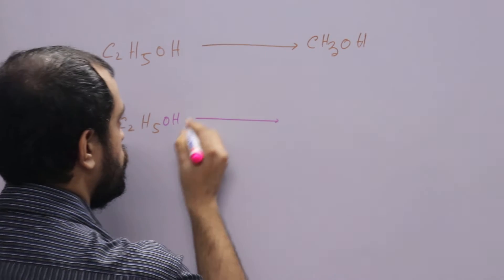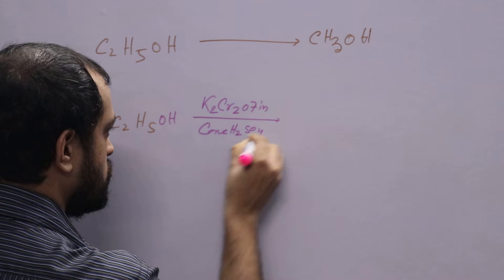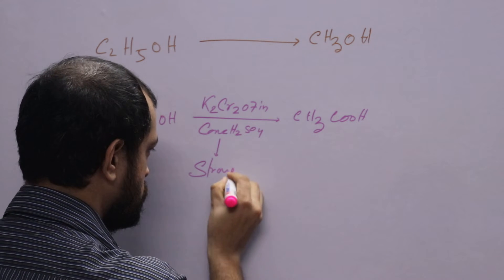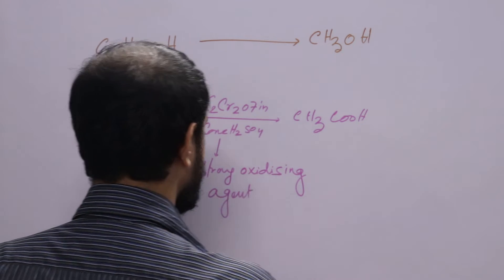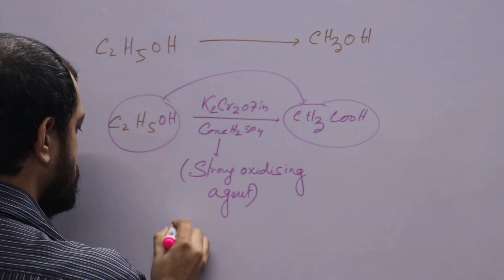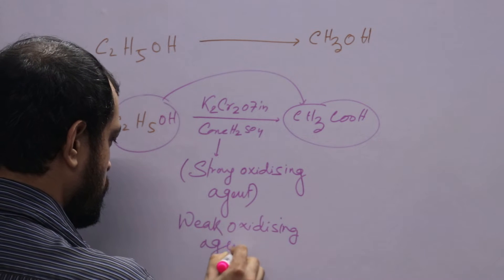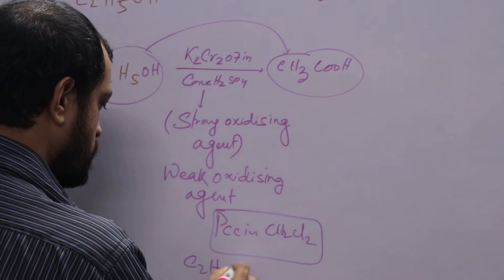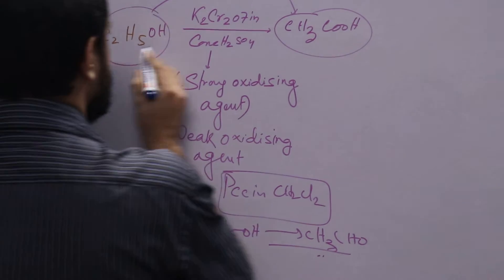This is the functional group. We can convert this using a strong oxidizing agent — because it is a strong oxidizing agent, it will convert alcohol directly to acid. If it is a weak oxidizing agent, for example PCC in CH₂Cl₂, then C₂H₅OH goes to CH₃CHO. We have already discussed this in great detail. So C₂H₅OH goes to CH₃CHO.